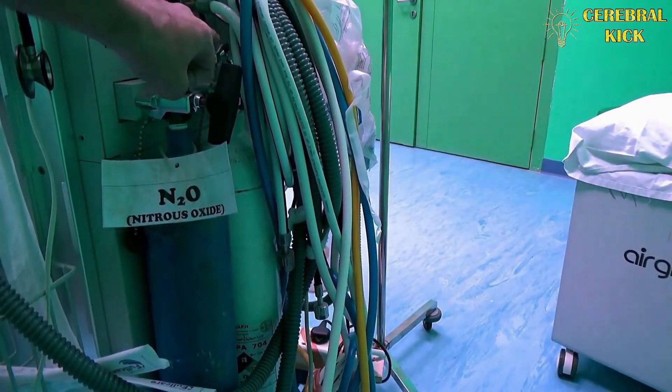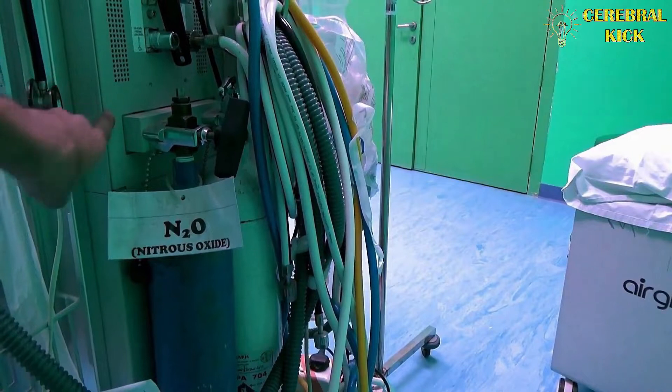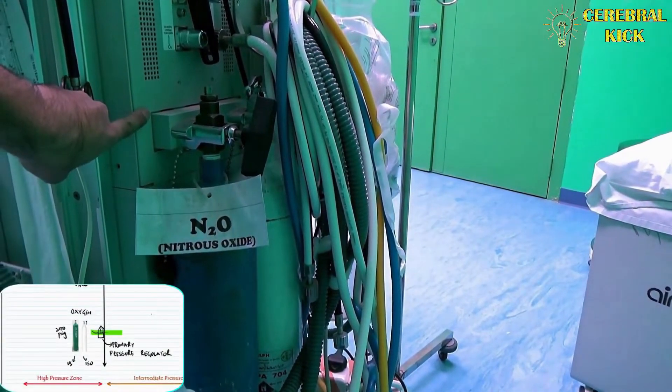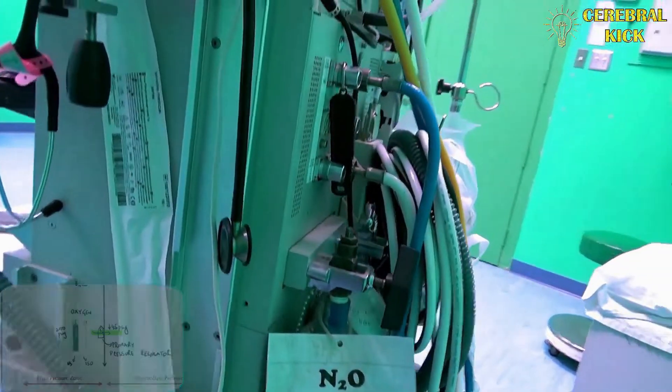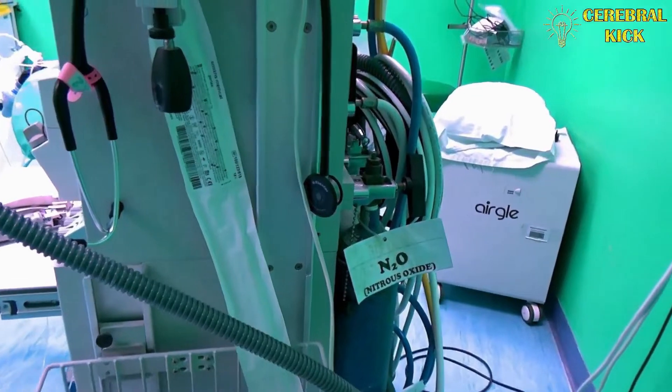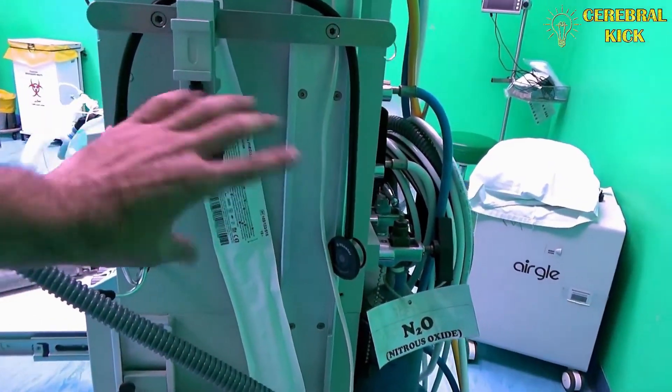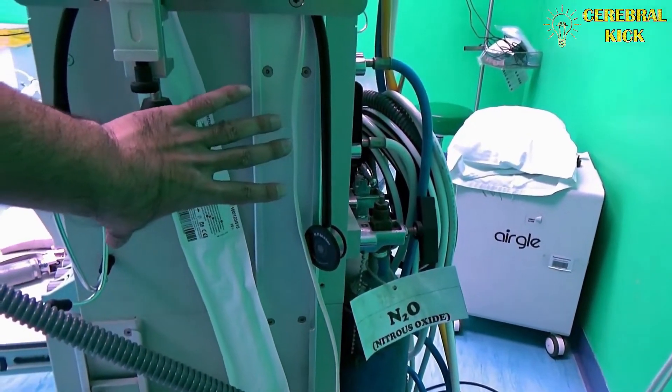Once this high pressure goes inside, there is a primary pressure regulator which reduces the pressures to 45 PSI. This is where the intermediate zone begins. Somewhere between the high pressure zone and the frontal low pressure zones, somewhere inside this panel which we cannot see, lies the intermediate zone.